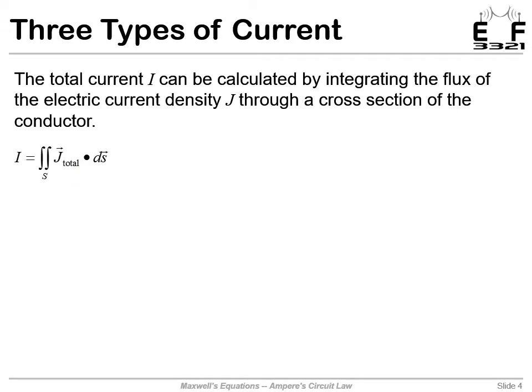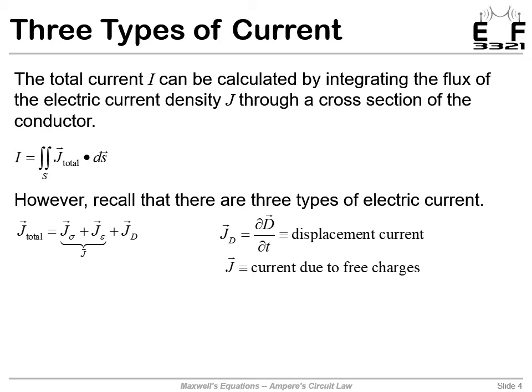Let's remember, there are actually three types of current density, three types of electric current. Each one will produce a magnetic field because each is a current. The total current density is the conduction current plus the convection current. These two together are due to free charges, and that's what the J term in Maxwell's equations is.